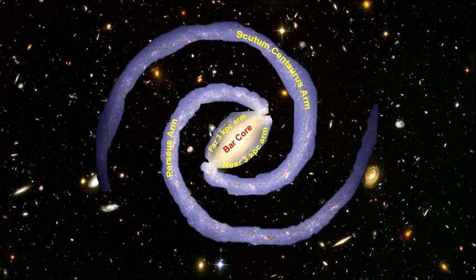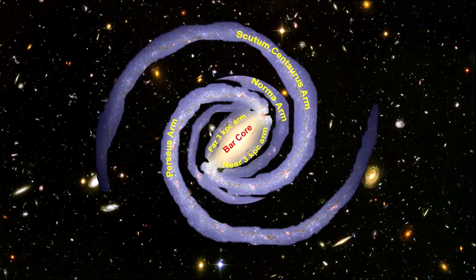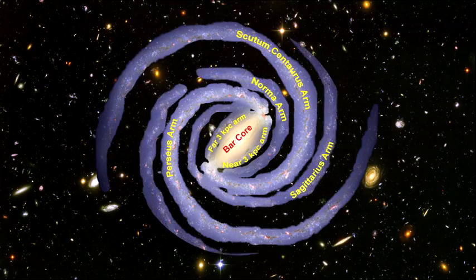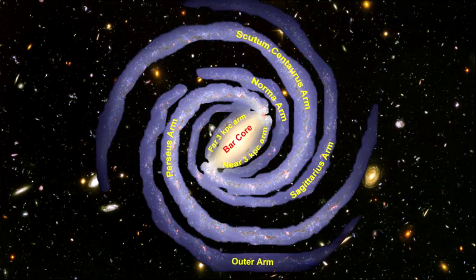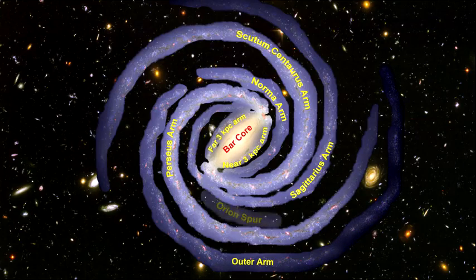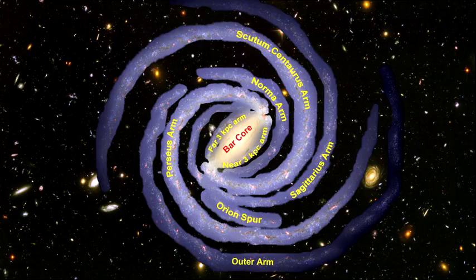Recent surveys discovered the two 3-kiloparsec arms, named for their length, now generally thought to be associated with gas flow roughly parallel to the central bar. Each of the two major arms consists of billions of young and old stars. Three thinner arms spiral out between them: Sagittarius, Norma, and the Outer Arm — primarily filled with gas and pockets of star-forming activity. There is also a spur off the Sagittarius arm called the Orion Spur, 3,500 light years across and approximately 10,000 light years long. We are located on the inner edge halfway along this spur, around 26,000 light years from the galactic center.